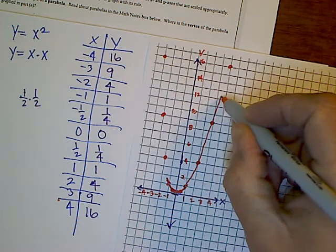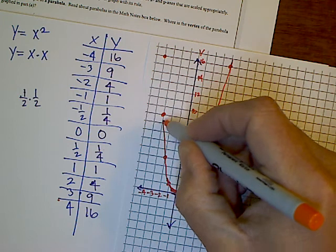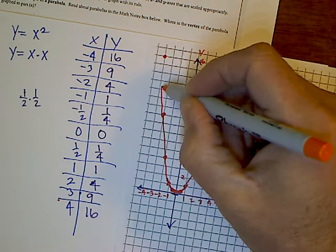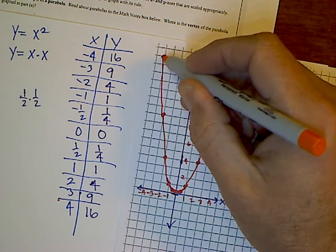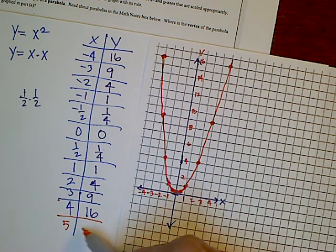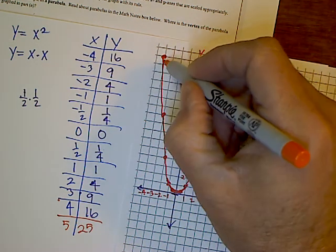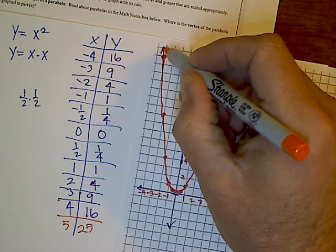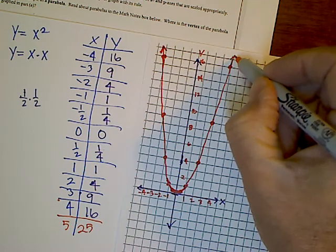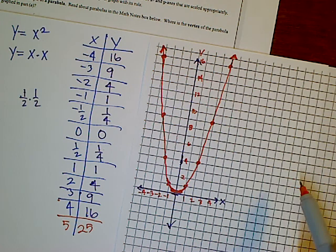When we get to the top here, the question is does it keep going? And it would. I could still put in a 5 and I would get 25, so it does keep going in this pattern. This is where I tend to go right past my last points and add some arrows to show that the pattern continues. That's what that pattern looks like.